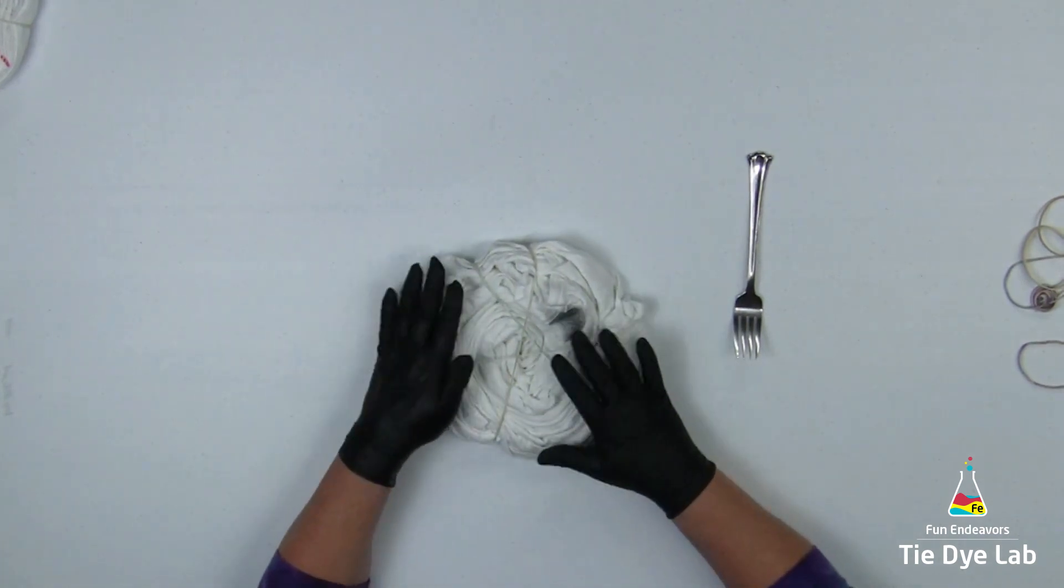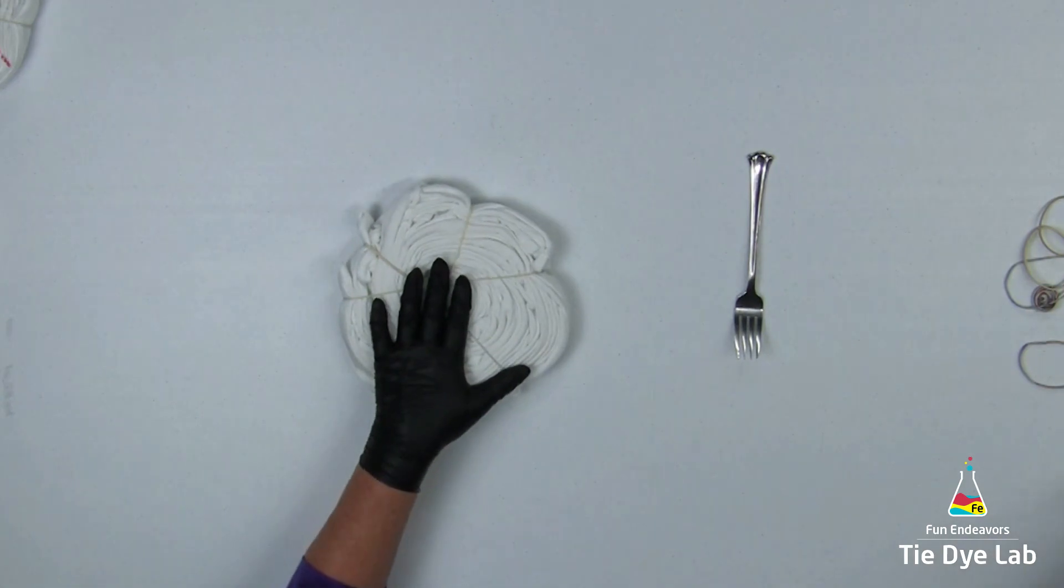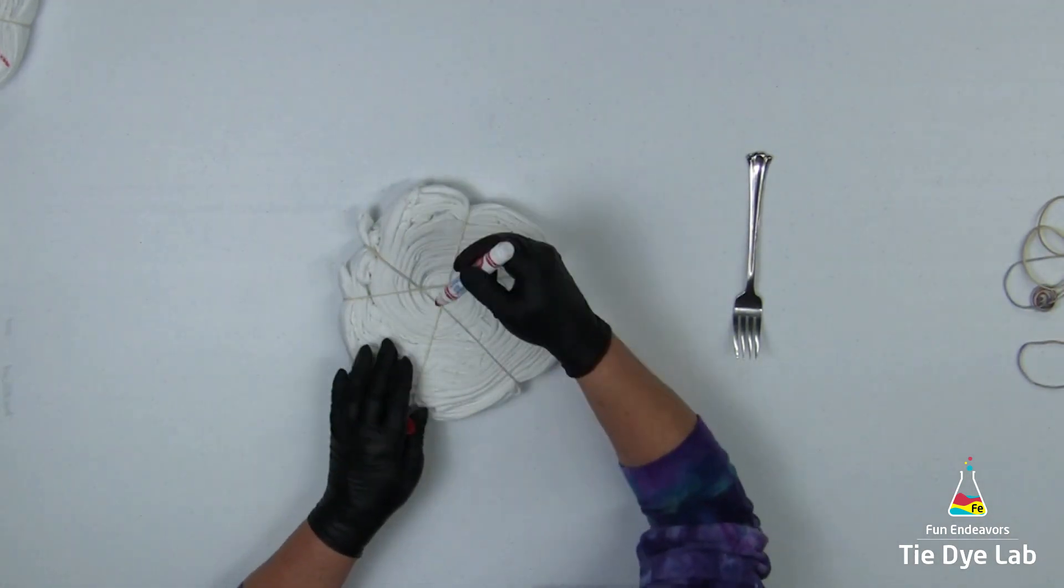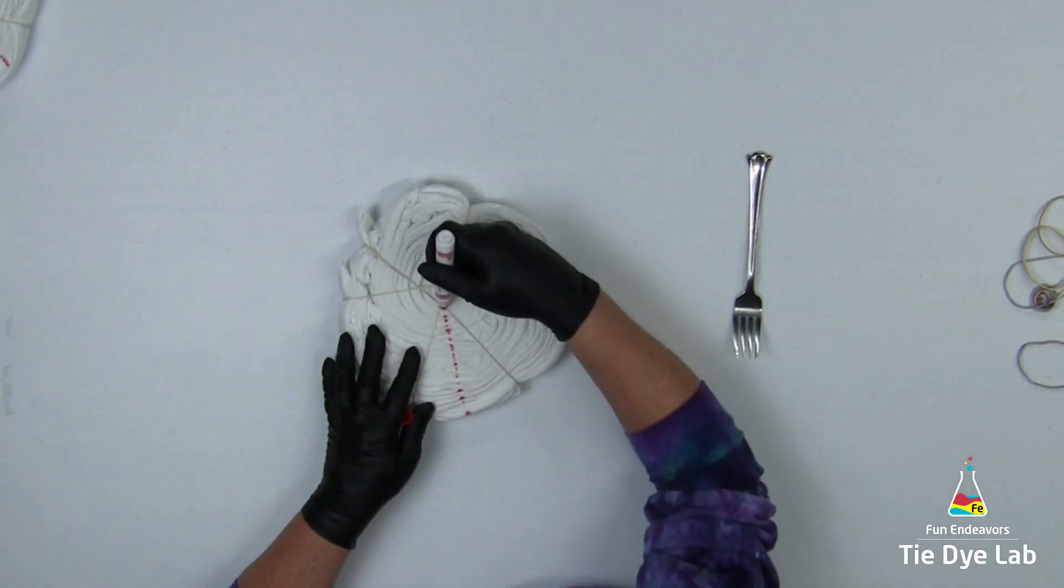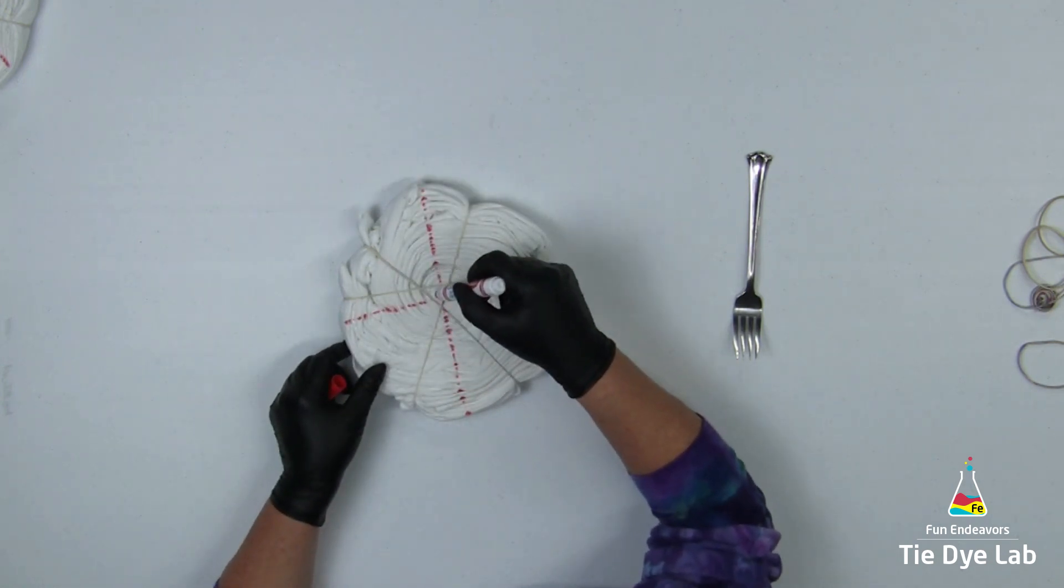Now that the shirt is tied, I'm going to go ahead and use a washable marker and make myself some lines on the shirt where I'd like to apply the dye. I'm going to divide my shirt into four sections and I'm going to take each one of the lines through that middle spiral.